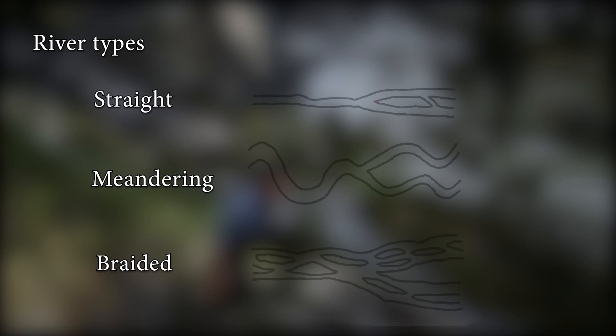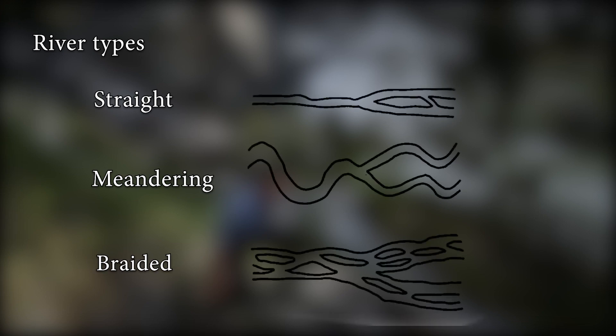There are several river types on Earth, which may be summarized in three main ones: straight, meandering, and braided. Of course there are more types, but simplistically these are the three most common ones, so they are the ones we'll talk about.